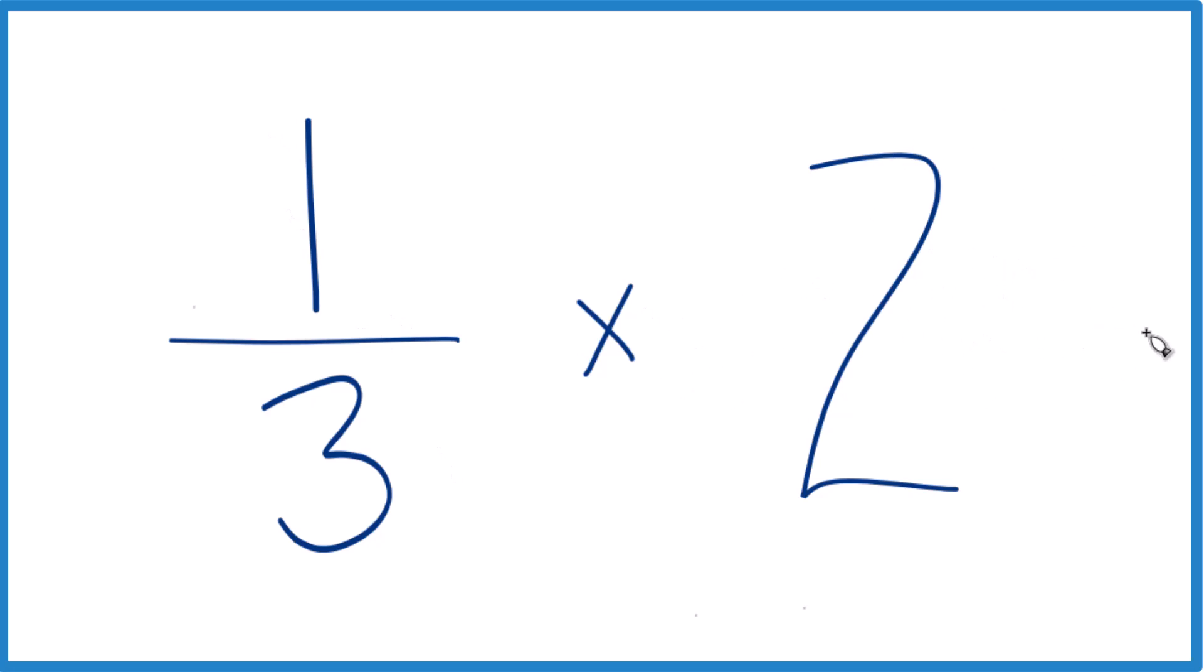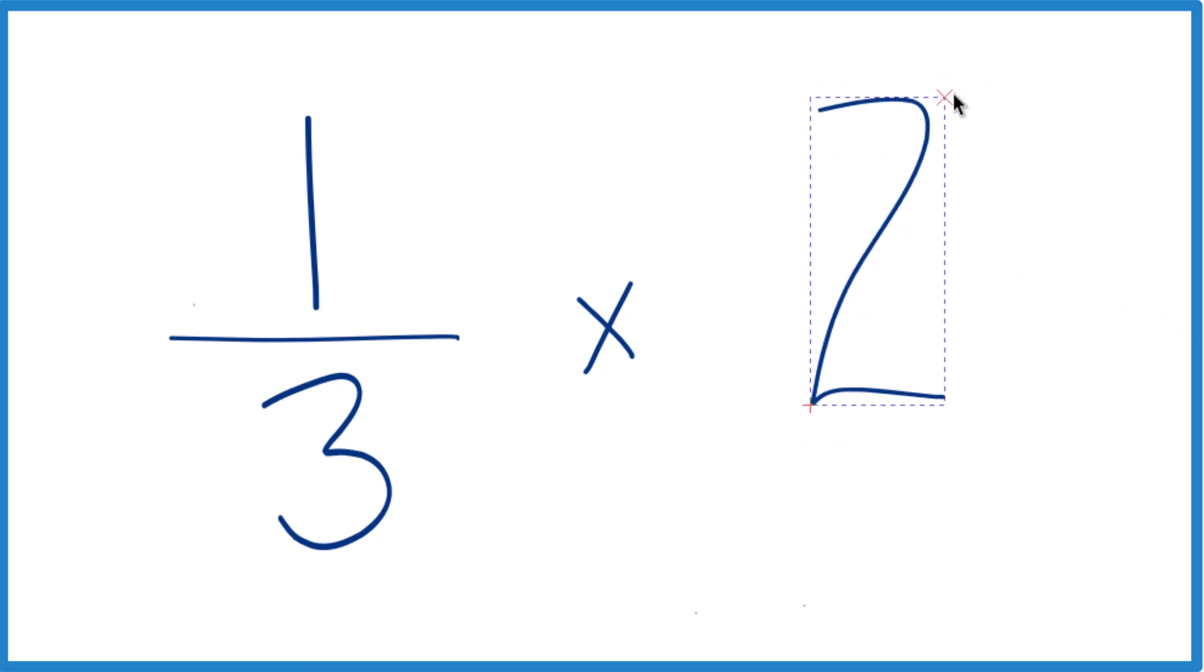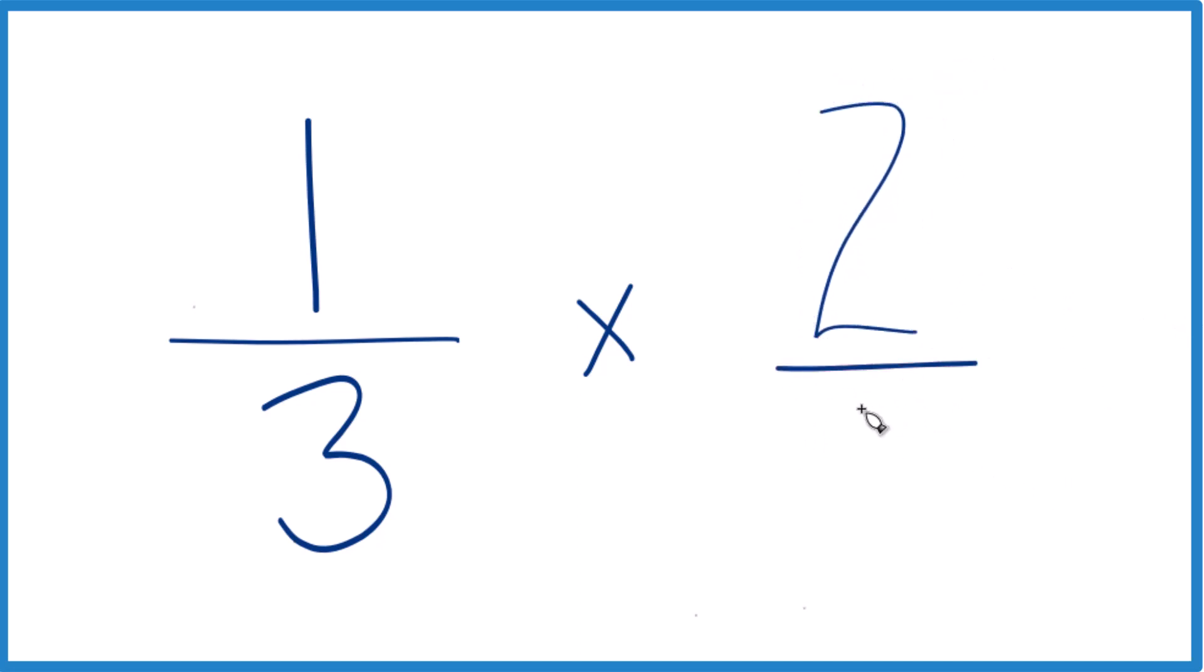Now what we can do is we can think of the two here like this. Let's call it two over one, because two over one, that's still two. It's the same value, it's just a little easier to work with multiplying fractions now.